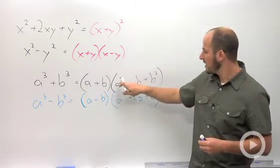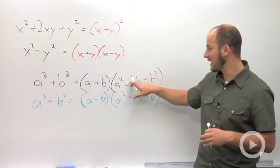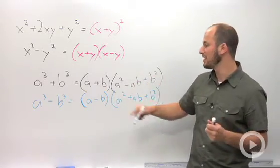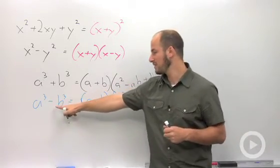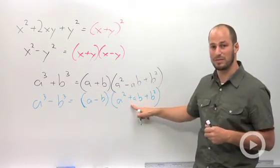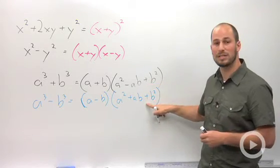We then have the a squared. All the values are the same, but then the second sign is going to be the opposite. So here we started with plus, this goes to minus. Here we started with minus, this goes to plus. The second sign is opposite and the third is always going to be positive.